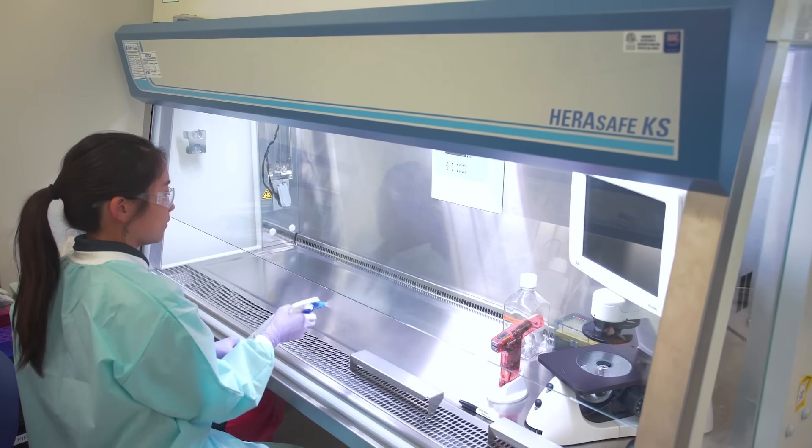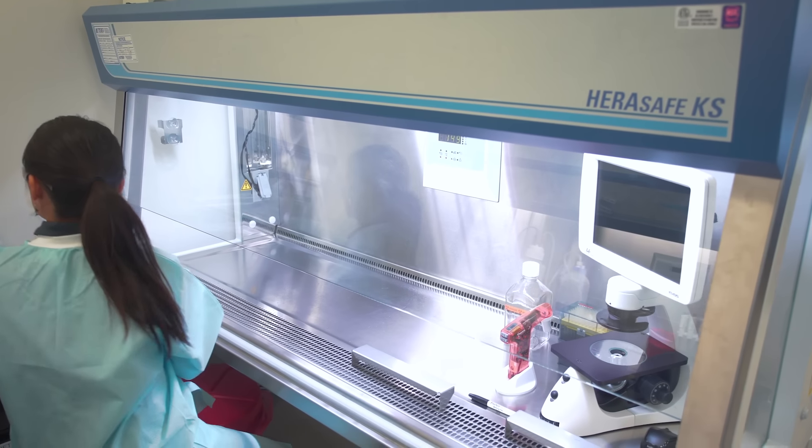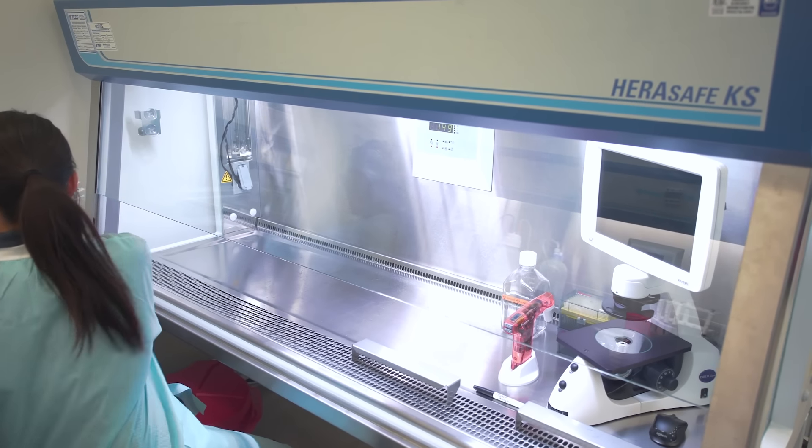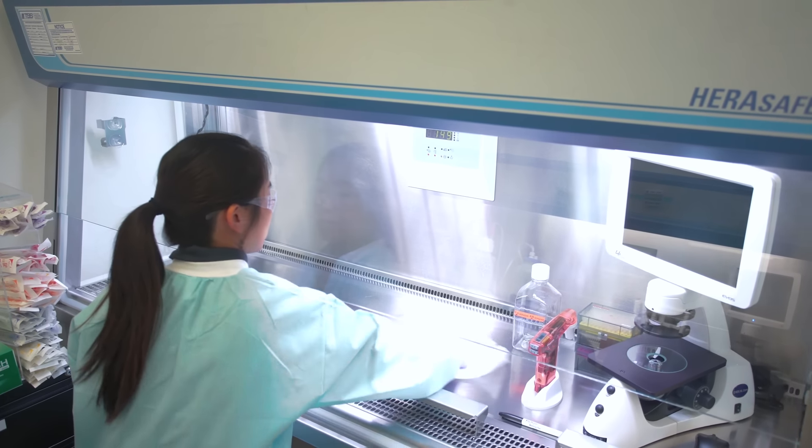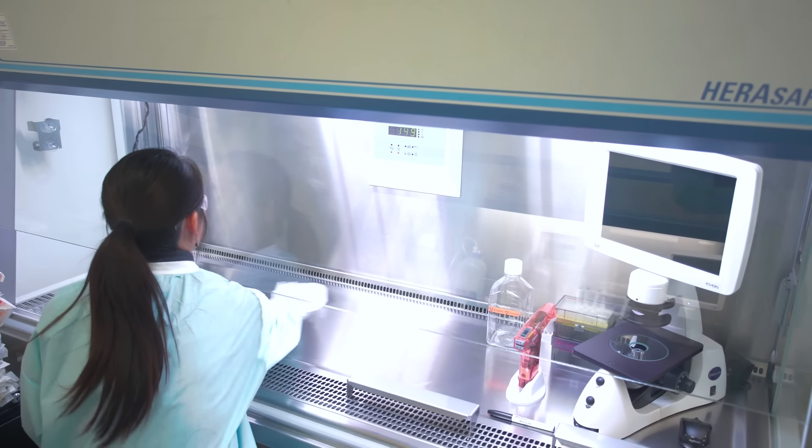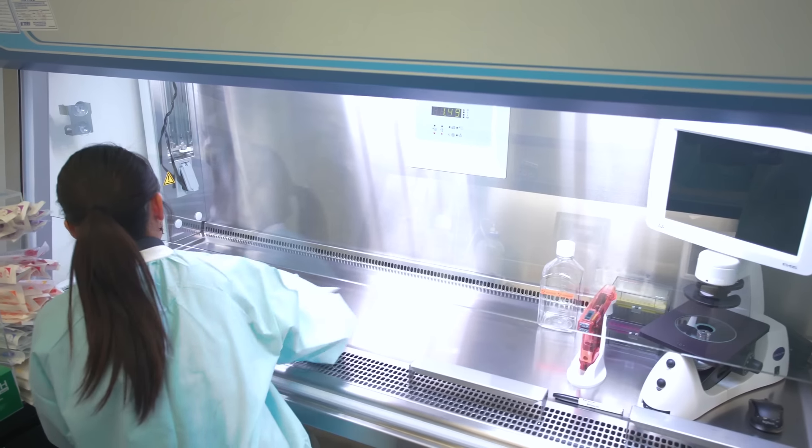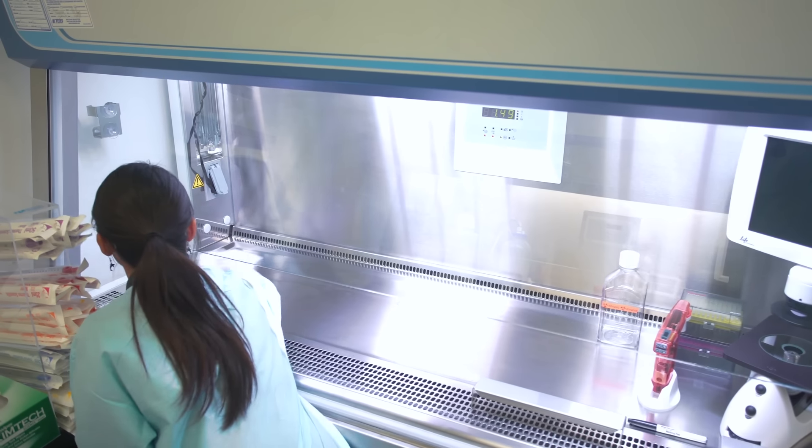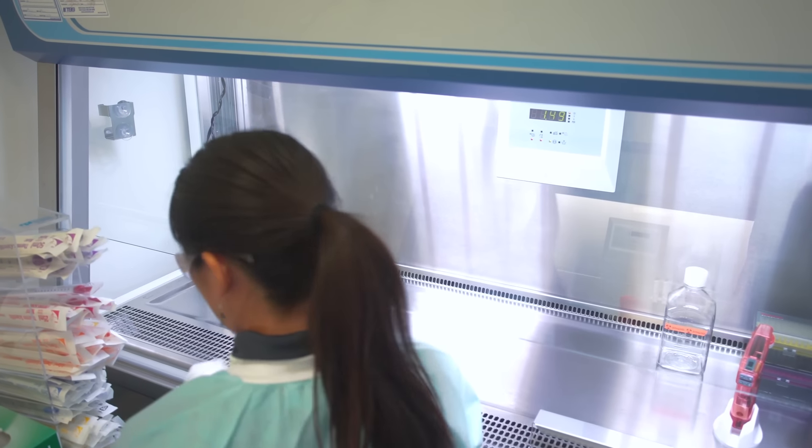Thawing cells is a very stressful process for them to endure. To aid your cell survival, perform each step quickly and under optimal conditions such as temperature, medium formulation, and seeding density. Clean and set up the cell culture hood before you remove the cells from liquid nitrogen storage.